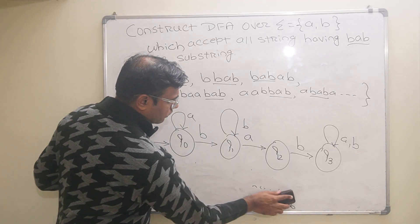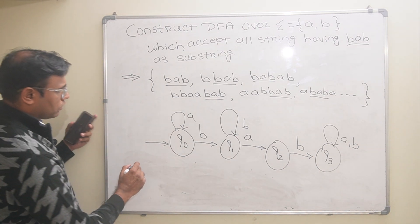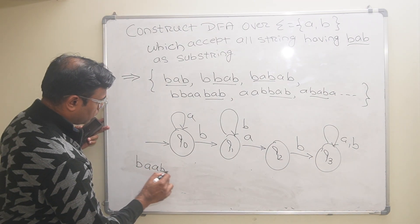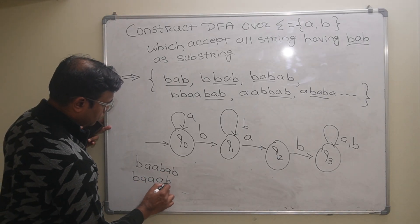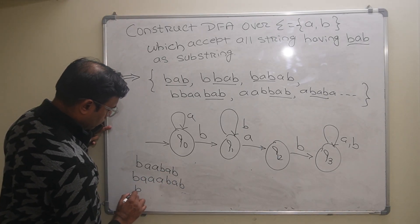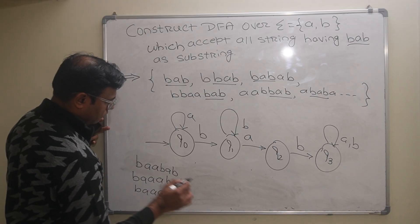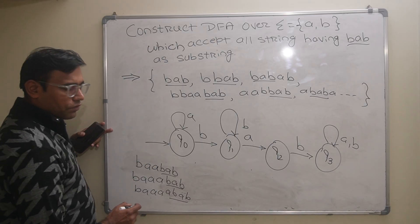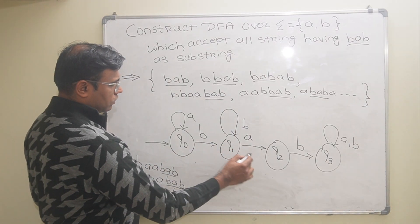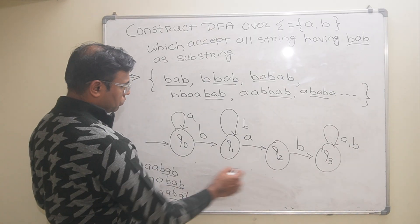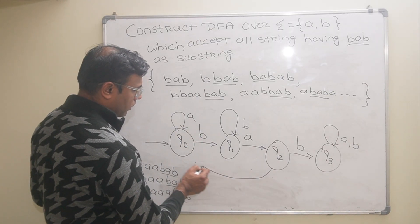Let us discuss the next possibility: BAABAB, then B with triple A then BAB, B with four A's then BAB, and so on. There is still BAB as a substring. To handle this, from Q2, if we read an A, we come back to Q0 — so it will accept any number of A's between the two B's.